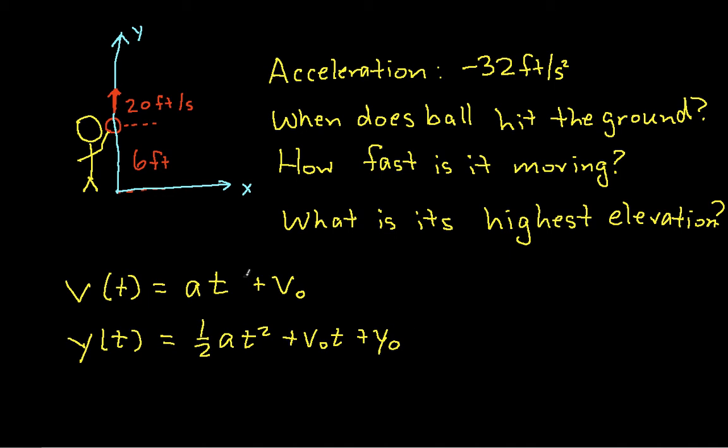Okay, so based on what we're given, it's actually pretty easy then to plug into these equations, and we have then that the velocity is given by the acceleration, which is minus 32 feet per second squared, times t, plus the initial velocity, which is 20 feet per second.